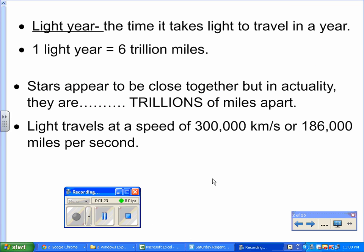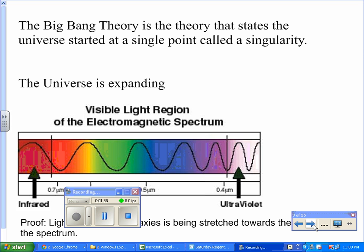In terms of astronomy, a light year is the time it takes light to travel in a year. One light year is equal to 6 trillion miles. In reality, stars out in space are actually trillions of miles apart. When we talk about the speed of light, light travels at a speed of 300,000 kilometers per second, or 186,000 miles per second.